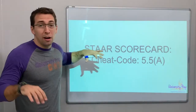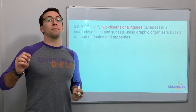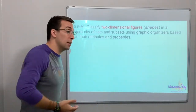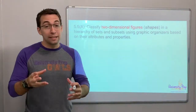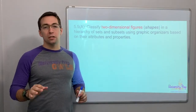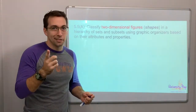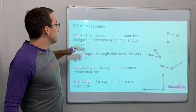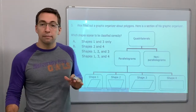Hello again. Star Scorecard cheat code 5.5a — we're talking about geometry, two-dimensional figures and shapes. Do you know your shapes? Rhombus, trapezoid, parallelogram, rectangle versus square. All squares are rectangles, but rectangles are not squares — that's a trick question every year on the STAR test. This is video number two, so we're not going to cover vocabulary. We have five questions we're going to look at.